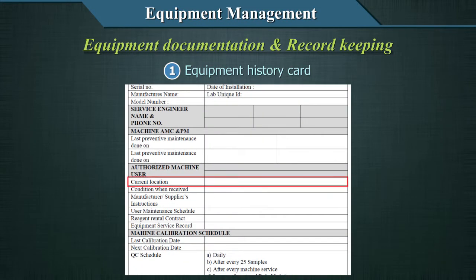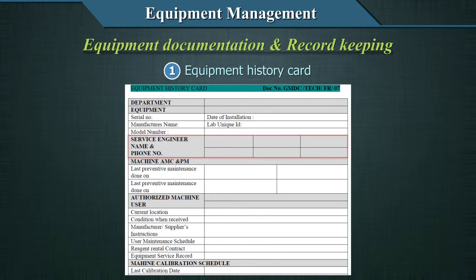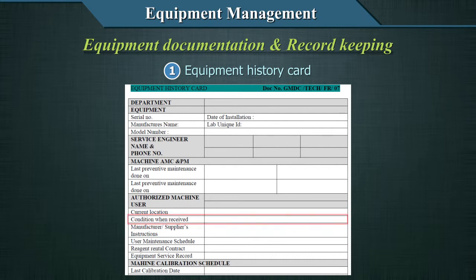Records should include: identity and location of the equipment; manufacturer's name, model and serial number or other unique identification; contact information for the supplier or manufacturer; date of receiving and date of entering into service; and condition when received, for example new, used, or reconditioned.